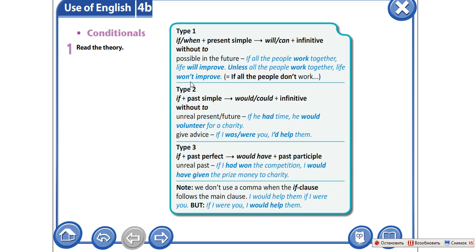The second type of conditional sentences. We use if plus past simple in the if clause and would, could and infinitive without to in the result. And we use the second type of conditional sentence when we talk about the unreal present or future, or when we are giving advice.